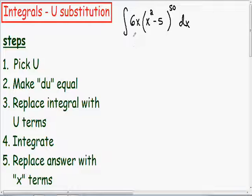Here we have the integral of 6x all multiplied by x squared minus 5 all raised to the 50th power. Notice in this example how we have a parenthesis raised to the 50th power multiplying all by the 6x. So this isn't just a basic integral where you can just add one to the exponent and divide by the same.